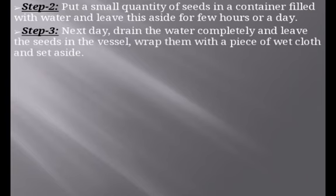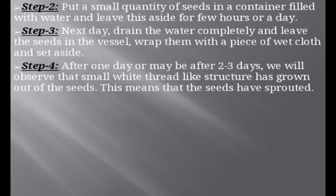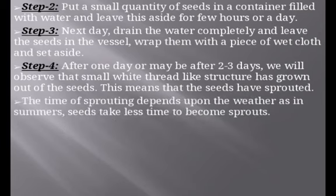In step 3, on the next day, drain the water completely and leave the seeds in the vessel. Wrap them with a piece of wet cloth and set aside. You can also keep them in an airtight container after draining the water. In step 4, after 1–3 days, we will observe that small white thread-like structures have grown out of the seeds. This means the seeds have sprouted — they have become sprouts.